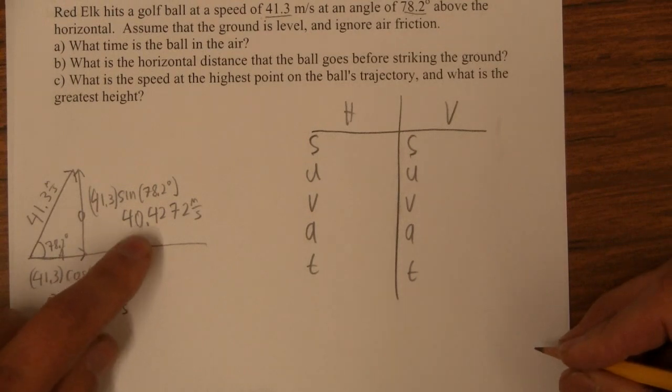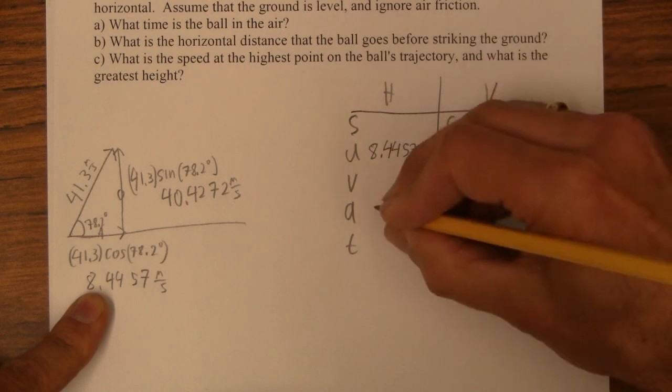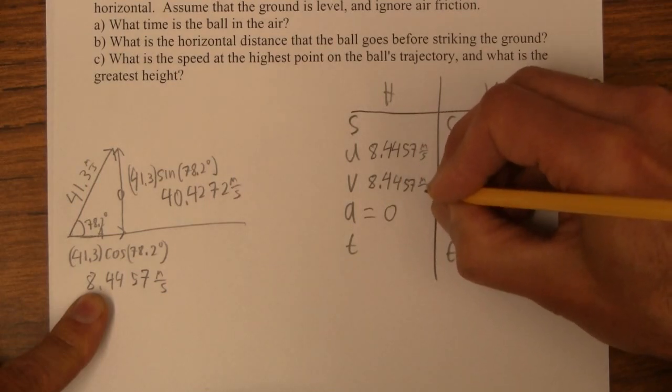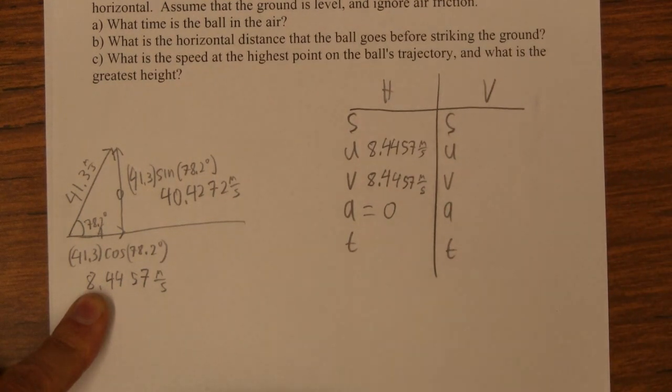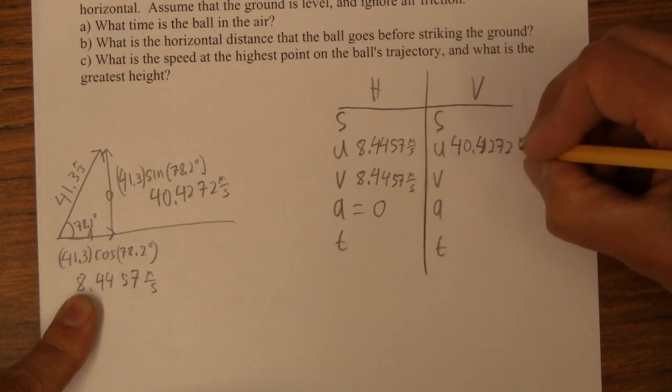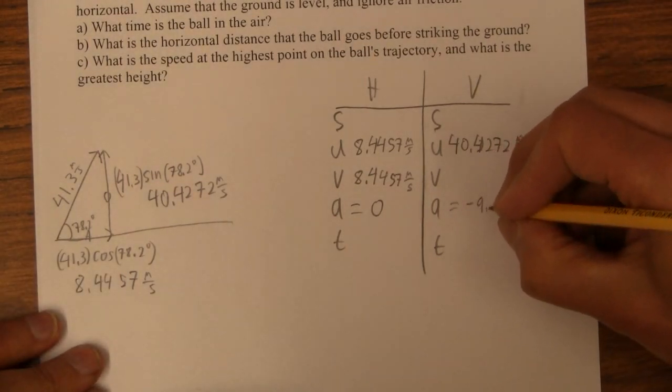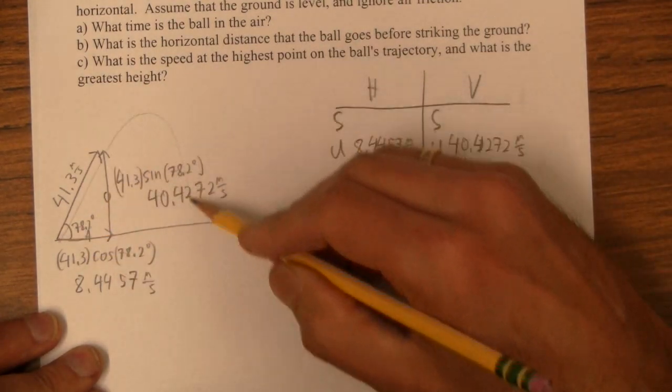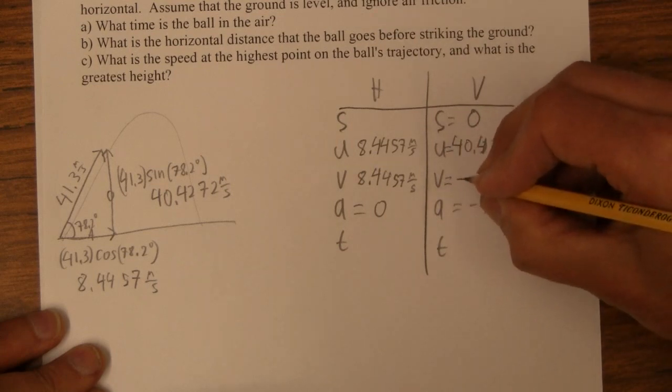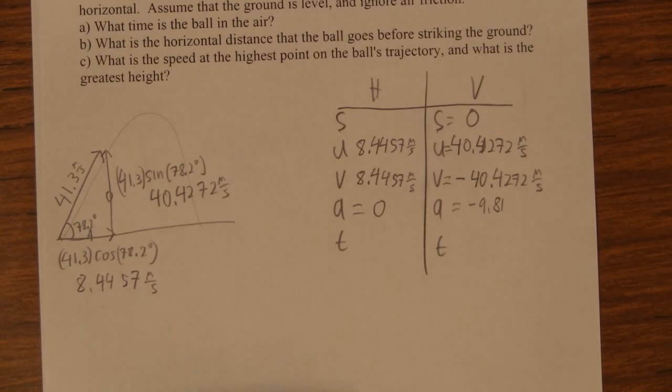And these velocities here become our initial velocities. This is our horizontal initial velocity. And because the acceleration is zero, it's also our final velocity. The whole time it's in the air, its velocity is 8.4457 meters per second. And then the initial vertical velocity is 40.4272 meters per second. And the acceleration is definitely negative 9.81. The actual displacement, this thing is going to go up and down like that. The actual vertical change in position is zero. I'm going to use this fact though. When it hits the ground, it's going to be going down at 40.4272 meters per second.